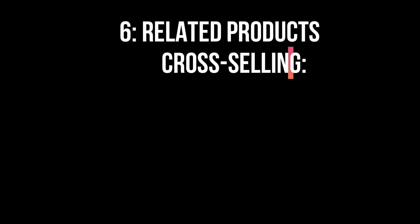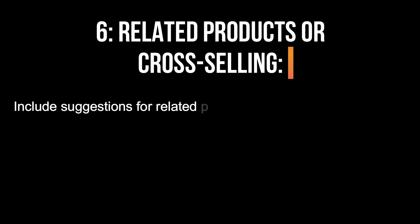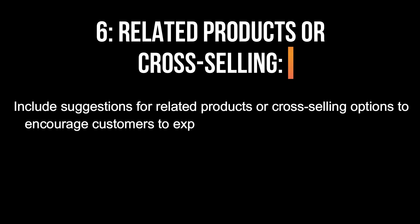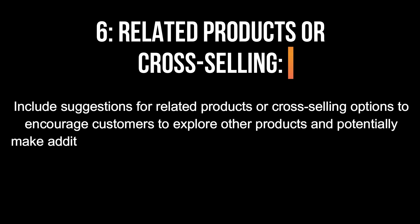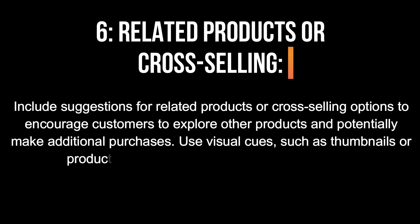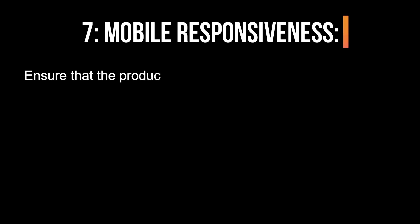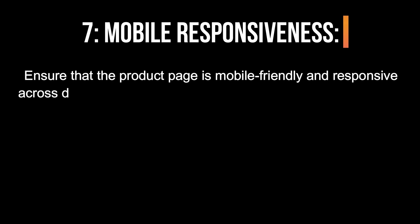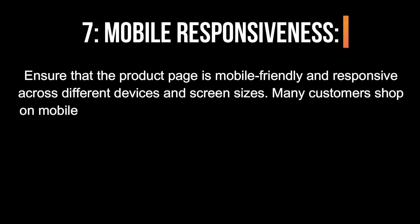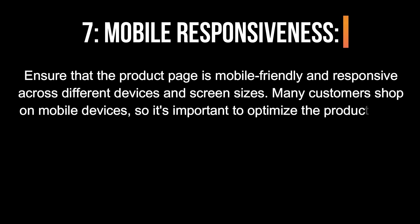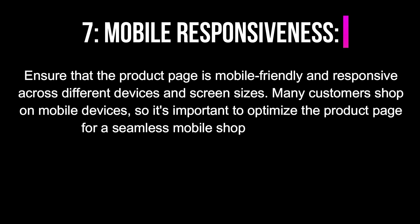6. Related Products or Cross-Selling. Include suggestions for related products or cross-selling options to encourage customers to explore other products and potentially make additional purchases. Use visual cues, such as thumbnails or product carousels, to showcase related products. 7. Mobile Responsiveness. Ensure that the product page is mobile-friendly and responsive across different devices and screen sizes. Many customers shop on mobile devices, so it's important to optimize the product page for a seamless mobile shopping experience.